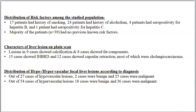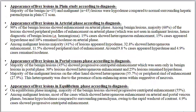On plain scan, 9 lesions showed calcification and 8 lesions showed fat components. 15 lesions showed intrahepatic biliary radical dilatation and 12 cases showed capsular retraction on plain scans, most of which were cholangiocarcinomas. Out of 27 hypovascular lesions, 2 were benign and 25 were malignant. Out of 54 hypervascular lesions, 18 were benign and 36 were malignant. Most benign lesions and 45 malignant cases appeared hypodense compared to the normal surrounding hepatic parenchyma.